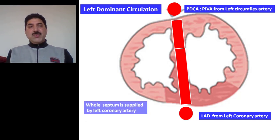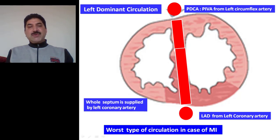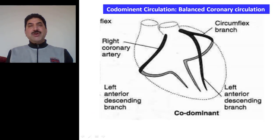In this way, the whole of the septum is supplied by the left coronary artery. This type of circulation has worse prognosis in case of myocardial infarction, because in addition to other parts of the heart supplied by the left coronary artery, the whole of the septum is also supplied by the left coronary artery and gets involved in myocardial infarction.